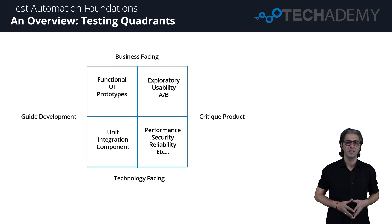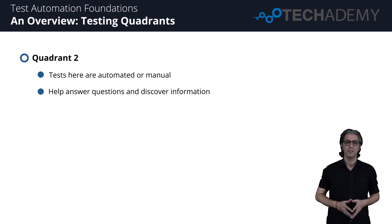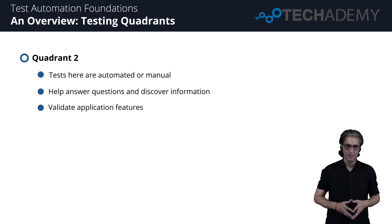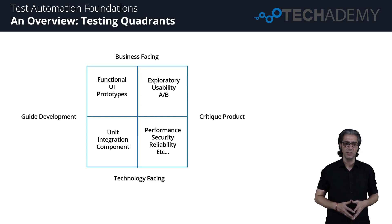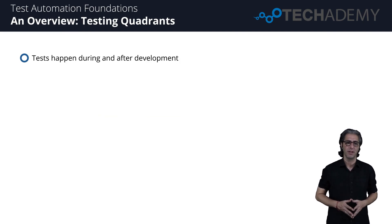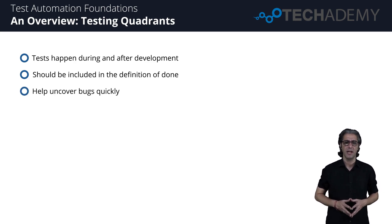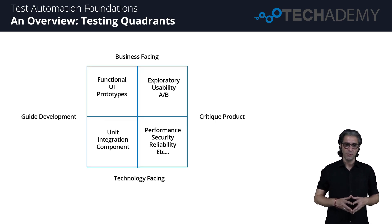Moving up to Quadrant Two in the top left, this describes business-facing tests that guide development. These tests can be automated or manual and help answer questions about the application. Instances of automated testing that fit here are functional and UI tests. Manual tests in Q2 use models like prototypes or mock-ups. Tests in Quadrant Two are likely performed during and after development and should be included in the definition of done for a story.